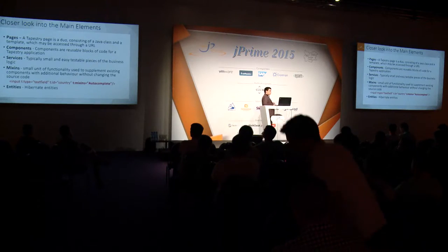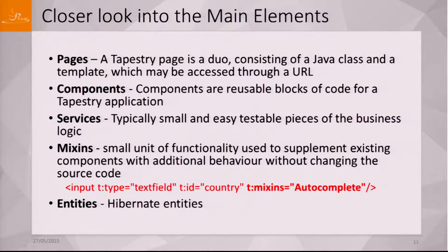Services are just normal Java classes — they just need to be placed in the services package and that's all. Mixins are something very interesting: they give us the ability to change the behavior of some of our components without changing the component itself. For example, using a mixin we can apply autocomplete functionality for an input in one specific place but not in others. We can write our own mixins to implement different behaviors. We also have entities for the ORM objects.